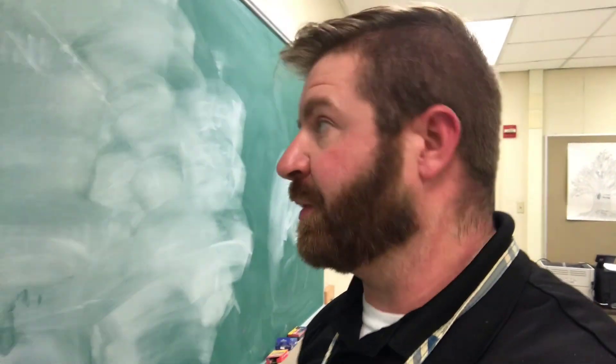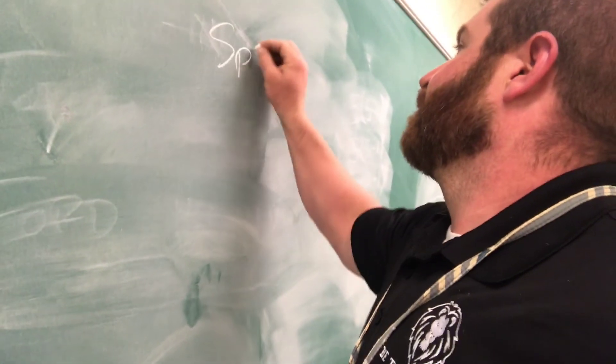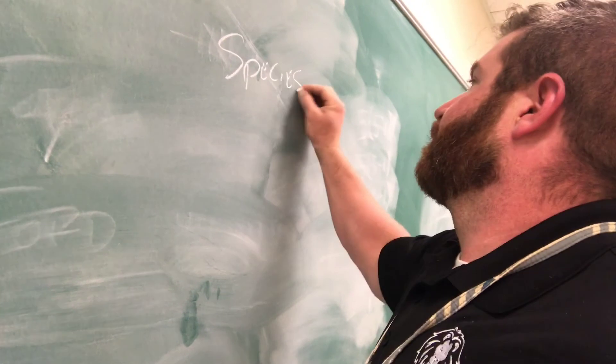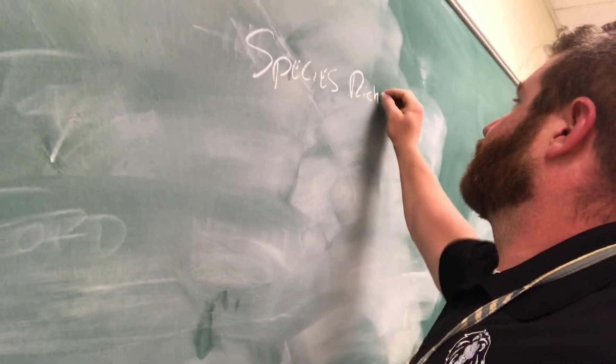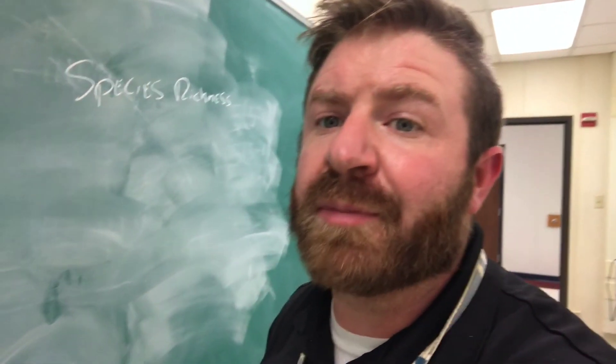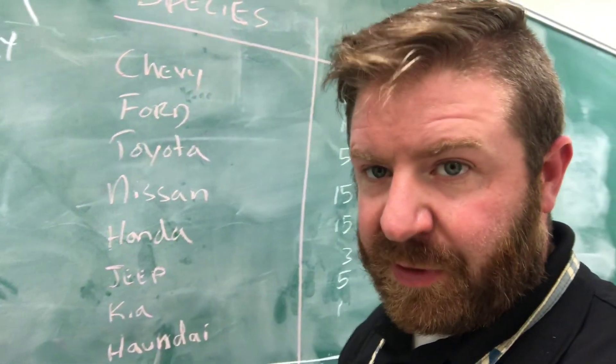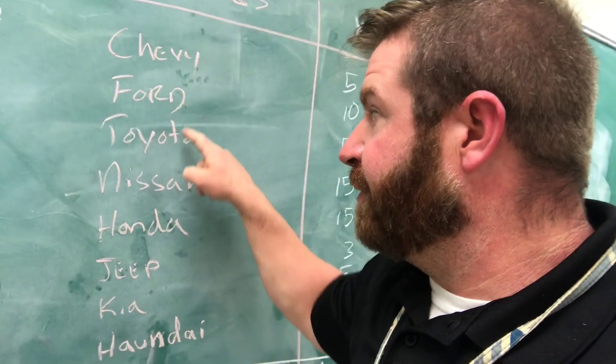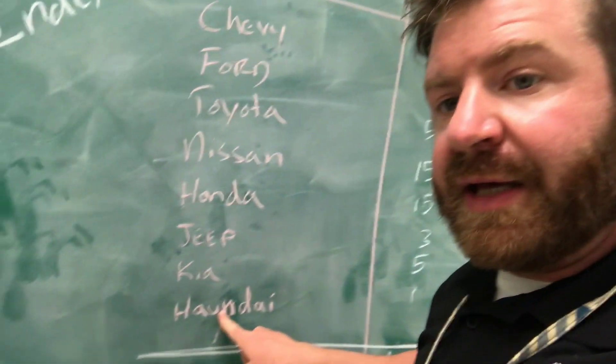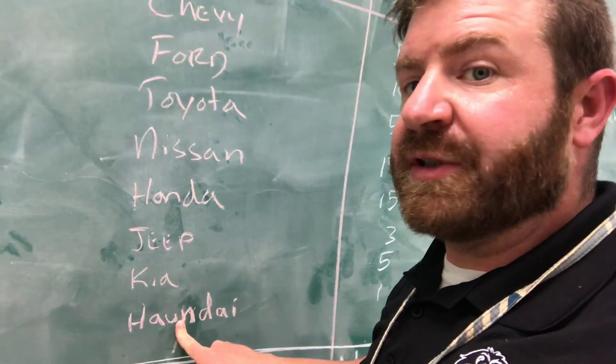Then you go through the math I just showed you, and that calculates the Simpson Diversity Index. To get a full picture, we also need an evenness number and a richness number. Richness is the easiest part — it's the total number of species you counted. In my example: 1, 2, 3, 4, 5, 6, 7, 8 — so my richness is 8, written as capital R.